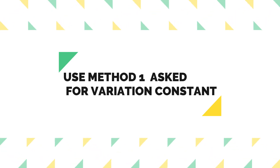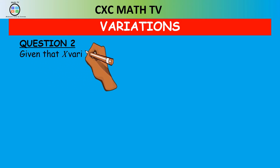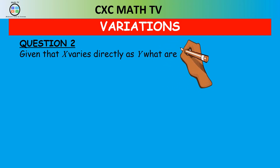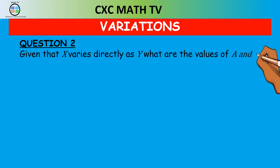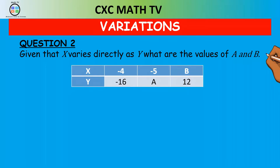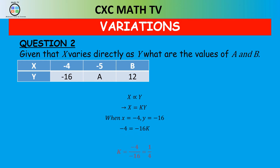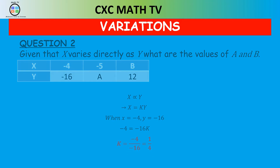Now let's look at a table question: given x varies directly as y, what are the values of a and b? Pause and attempt to find a and b. We say x is proportional to y, so x equals a constant times y. When x is negative 4, y is negative 16. Plugging those into the equation and transposing for k, we get k equals one quarter.